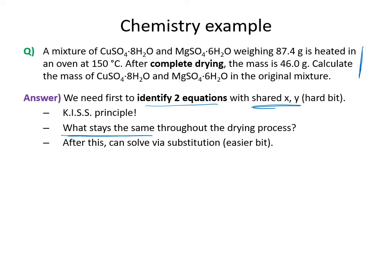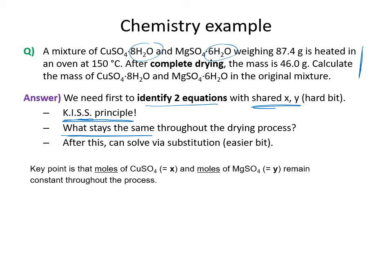Keep it simple: don't over-complicate things. The problem is: a mixture of hydrated copper sulfate and hydrated magnesium sulfate weighing a certain number of grams is heated in an oven. After complete drying — removal of the waters — the mass is lower. We need to calculate the masses of each hydrated salt in the original mixture.